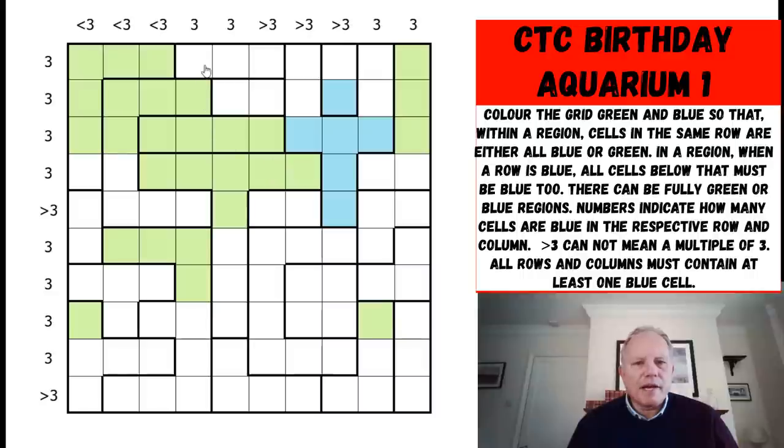Column four has got a three. We've only got five spaces left. Now I'm thinking, where does blue go? One of these three must be blue. And if one of them's blue, the bottom one is blue because the water always sinks. So all of those are blue. That's quite limiting in column two because again, there's a maximum of two blue cells. So that one must be green. This one must be green. And therefore the other cells in its shape in that row must be green.